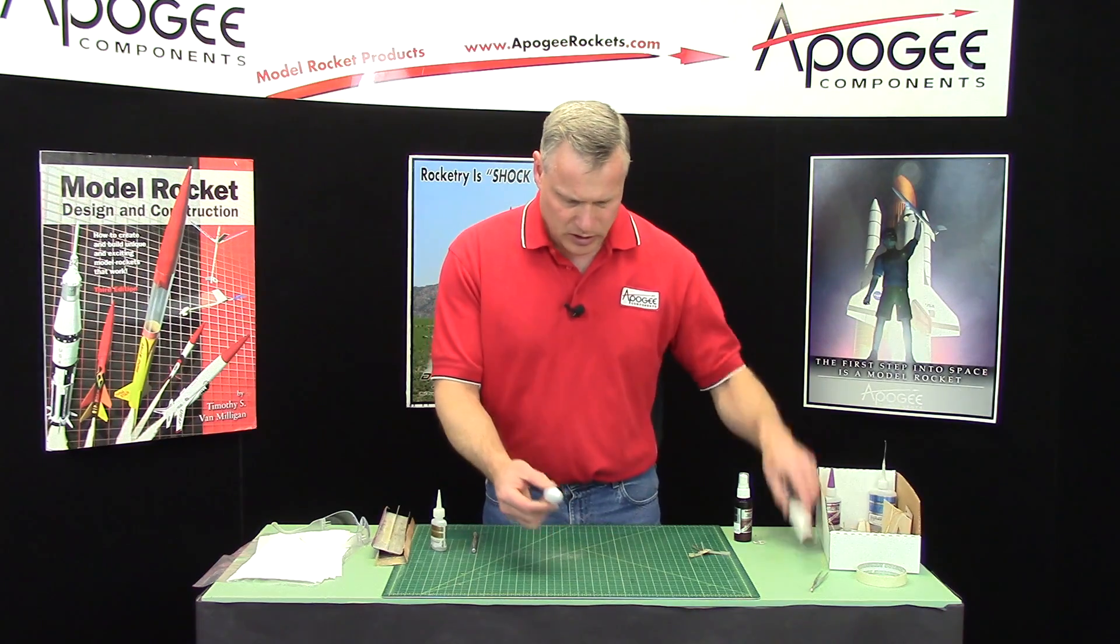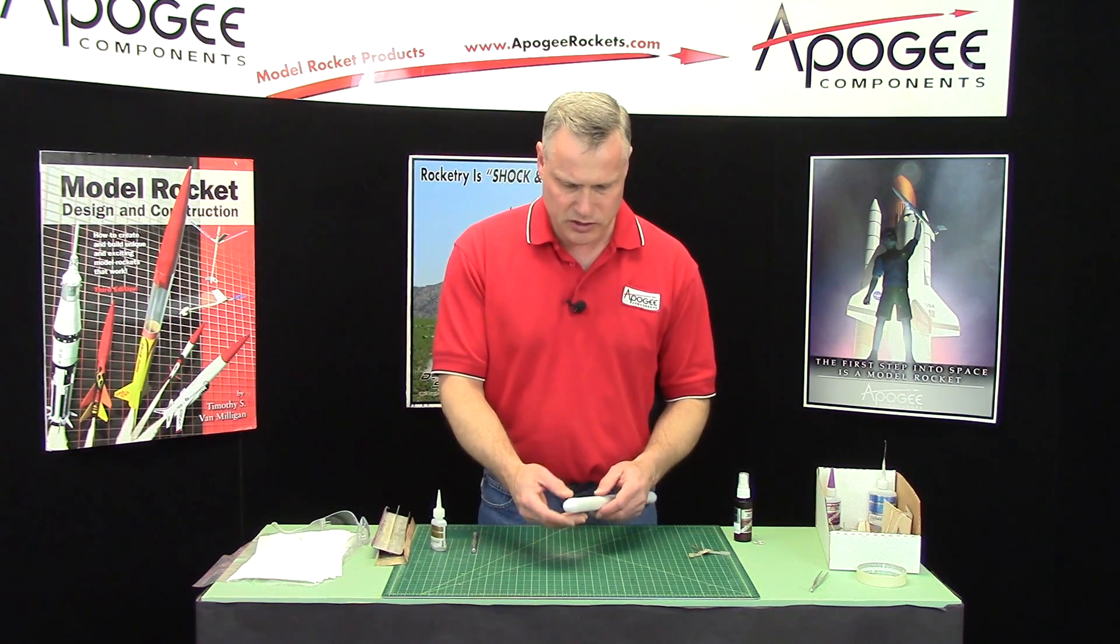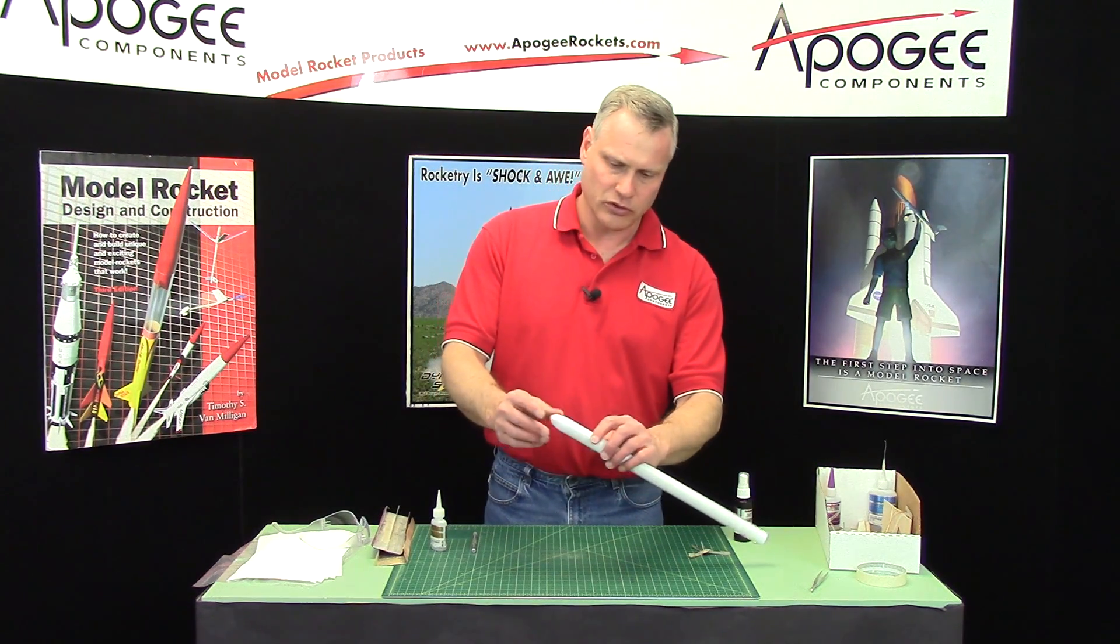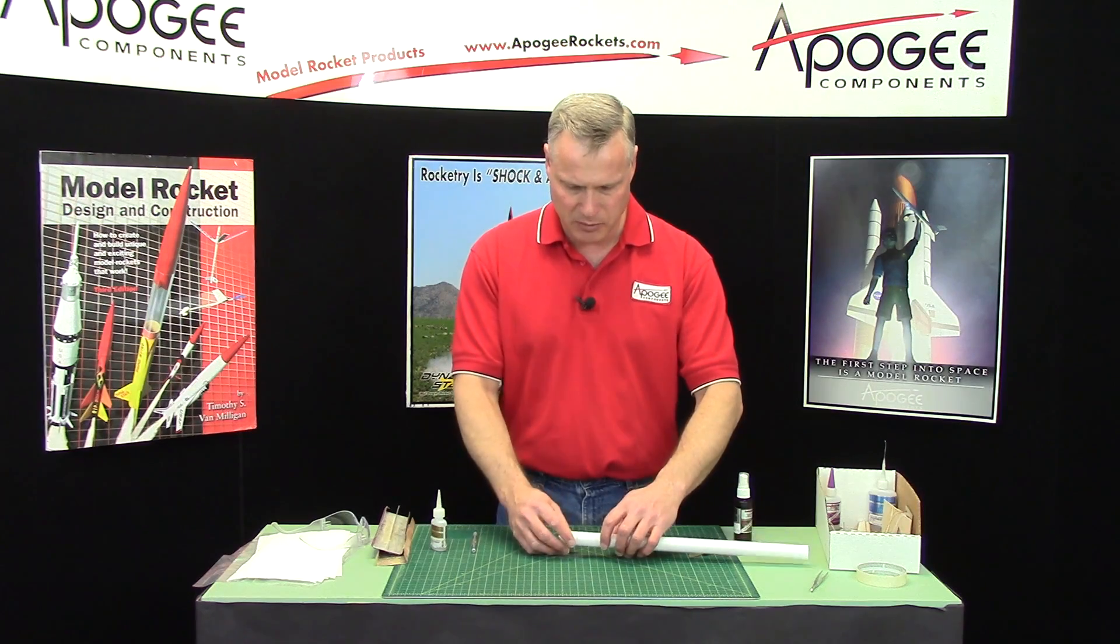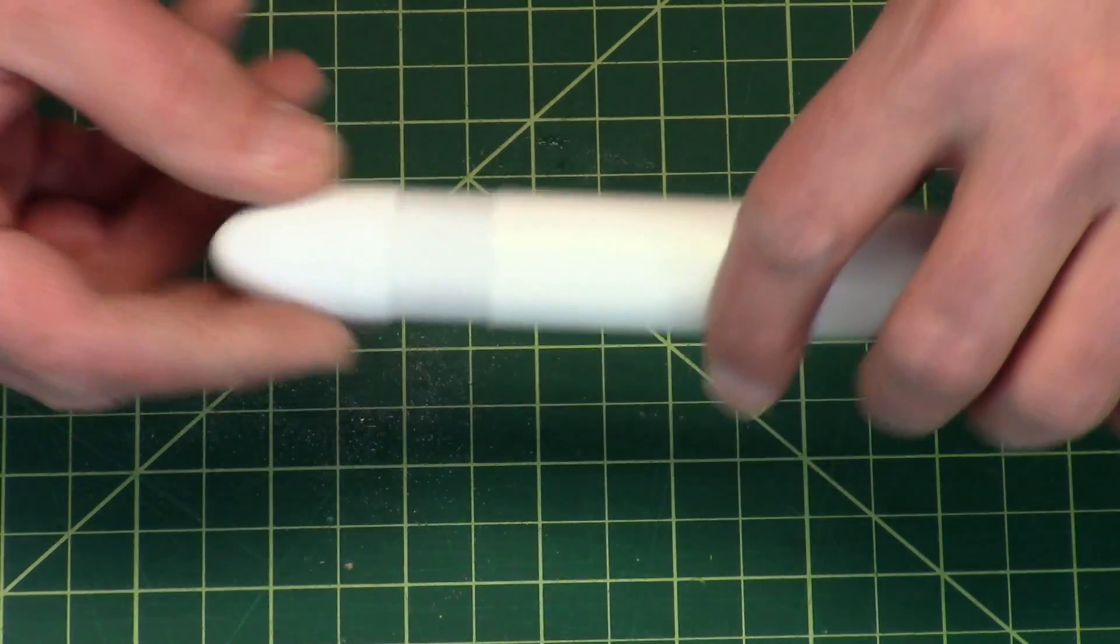Before you glue it on, slide it into the tube, because sometimes you can get these things crooked. You know, your nose cone might be crooked and you might get a gap. So I want to make sure I don't have a gap, so I want to kind of rotate it around.